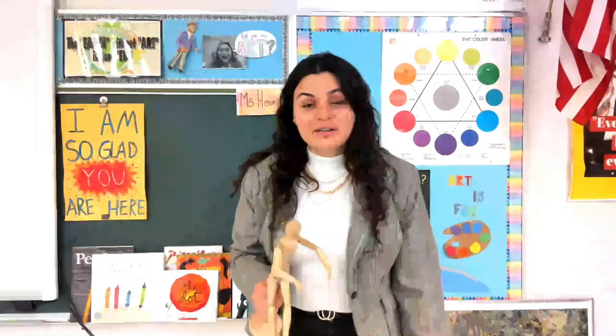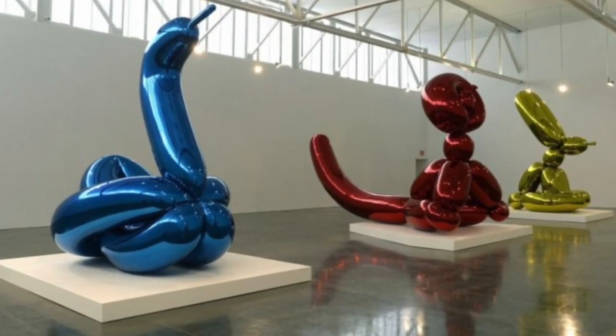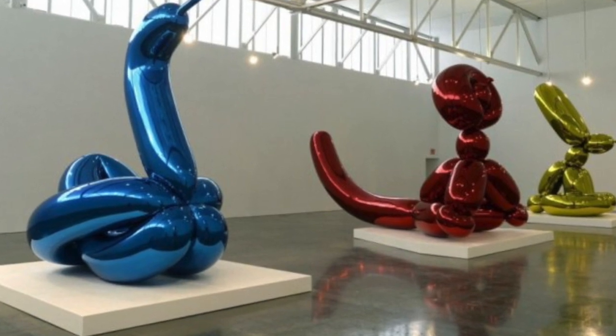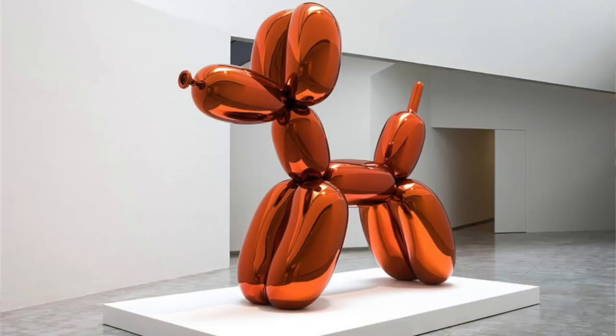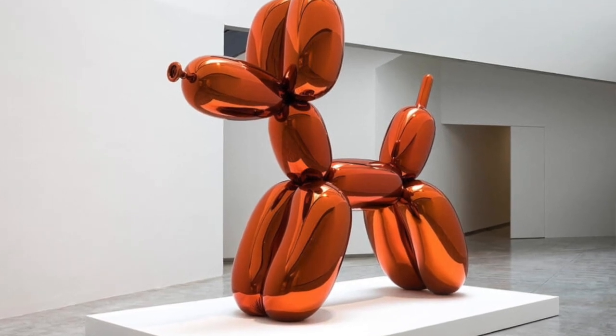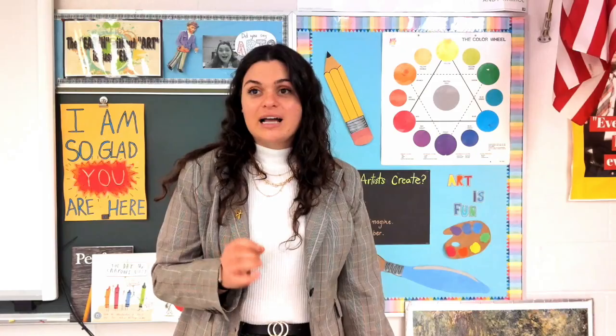So he makes these 3D objects that look like balloon animals. They look like balloon dogs. Here are some of his now. As you can see it looks like it's made out of balloon. It's a huge gigantic balloon but really they're made out of metal and sometimes other materials. It's quite fun. I love his bright colors.